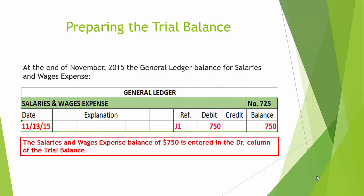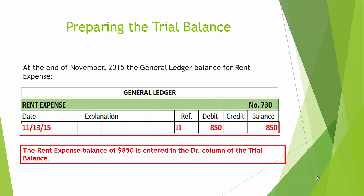At the end of November 2015, the general ledger balance for Salaries and Wages Expense is $750 debit — this is entered in the debit column of the trial balance. The general ledger balance for Rent Expense is $850 debit, and this amount should also be entered in the debit column.